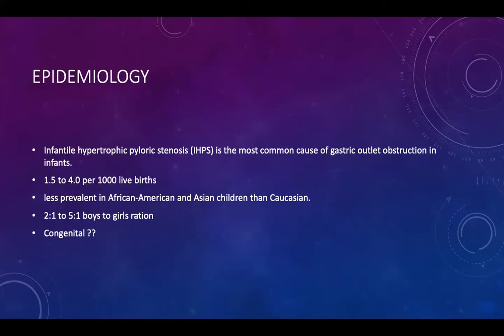Ramstedt in 1912 suggested the muscle does not need to be closed. We now adopt the Ramstedt pyloromyotomy, either open or laparoscopic. Regarding epidemiology, pyloric stenosis is one of the most common causes of gastric outlet obstruction in infants, with an incidence ranging from 1.5 to 4 per 1,000 live births. It is less prevalent in African-American and Asian children than Caucasians, and is more common in boys.